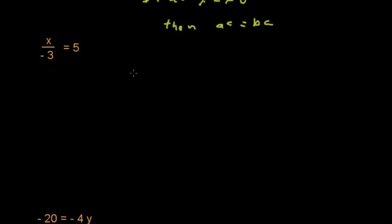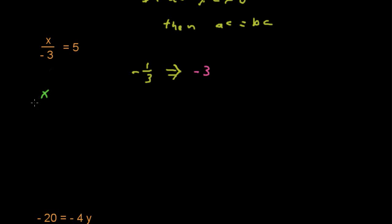Notice we have x divided by negative 3 equals 5. x over negative 3 is the same as negative one-third times x. What is the multiplicative inverse of negative one-third? That's just the reciprocal, or negative 3. If we multiply both sides of the equation x over negative 3 equals 5 by the multiplicative inverse, that negative 3,